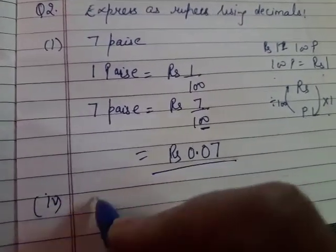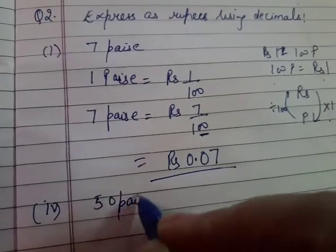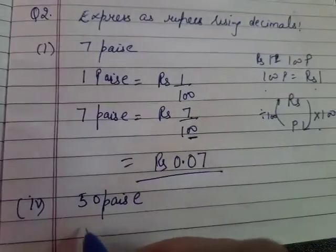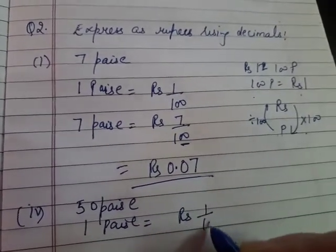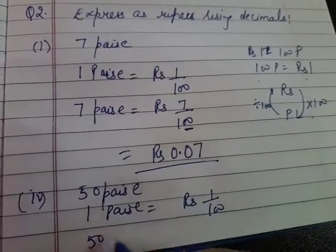Same as if you have fourth part, this is fifty payasas. Aba aap ke paas fifty payasas hai. So one payasa me kitne rupees honge? That is one by hundred. So fifty payasas me kitne ho jayenge?